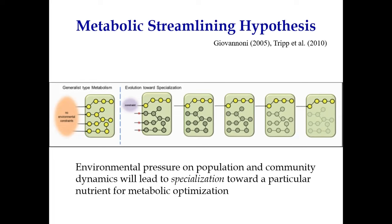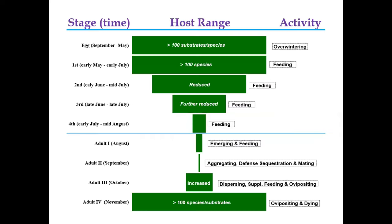I'm trying to fit these two hypothesis series into the lanternfly scenario. As previous speakers talked about, the lanternfly can feed on lots of plant species, and they will lay eggs on many species as well. I created this schematic — it's not an accurate representation of species number, but shows on the left the stage and time where you can observe them in the field. The middle is the host range or substrate list, and on the right are activities. For example, eggs will be found in the field from September to May on over hundreds of substrates or species.